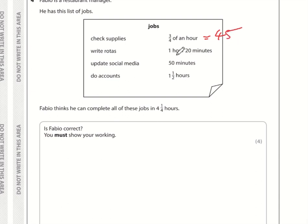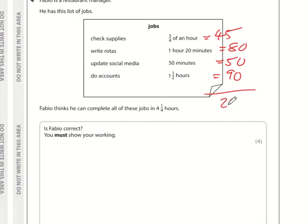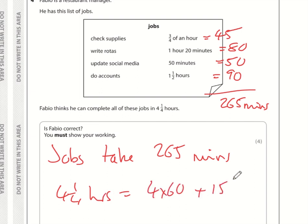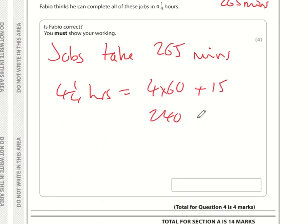Question four: it's easiest to turn everything into minutes. That's 45 minutes, 60 plus 20 which is 80 minutes, 50 minutes, and one and a half hours which is 90 minutes. The total is 80 plus 50 plus 130 plus... making 265 minutes for the jobs. Four and a quarter hours is 4 times 60 plus 15, which is 240 plus 15 equals 255 minutes. So Fabio is not correct — the jobs will take 10 minutes longer than he's budgeted.